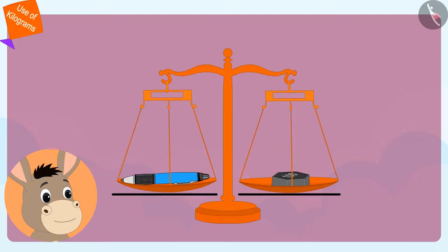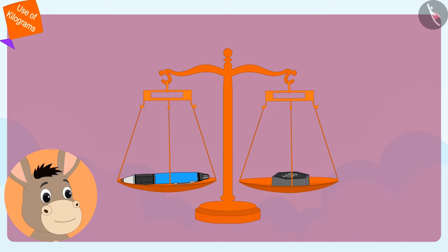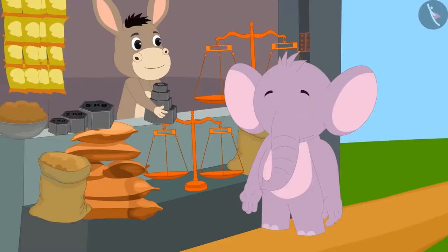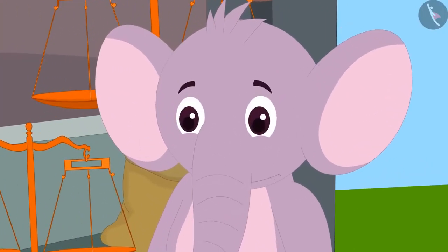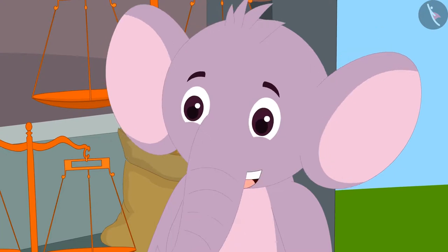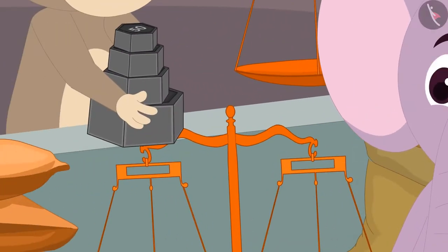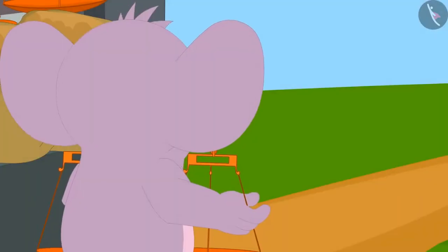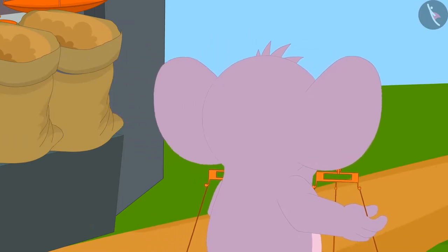Both the sides of the scales came to the same level. Kids, do you know what this means? Yes! This means that Bhola's pen weighs 100 grams. Appu became even more excited to learn about measuring weight in grams. He also bought few grams weights from Bhola and happily went to his house.